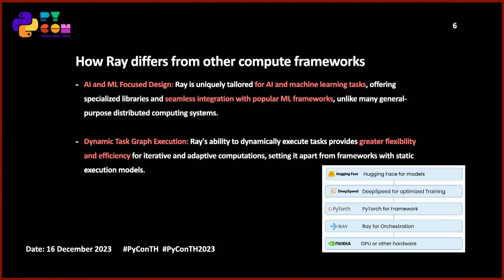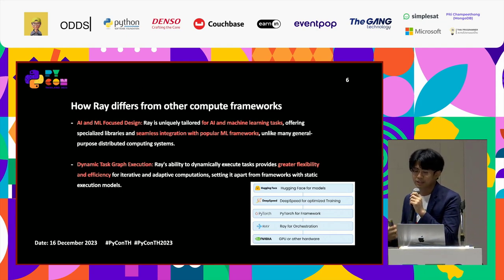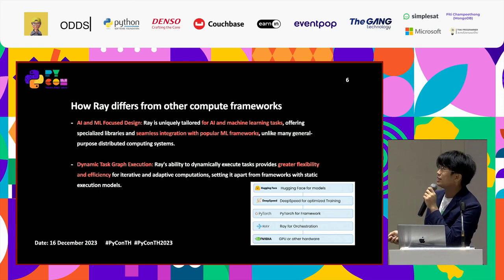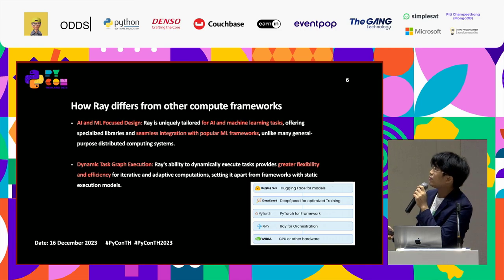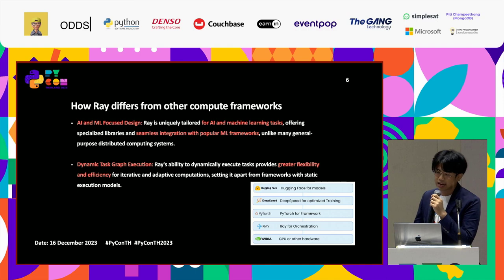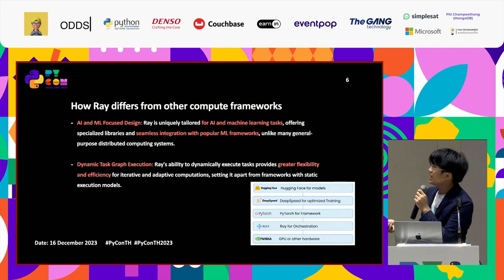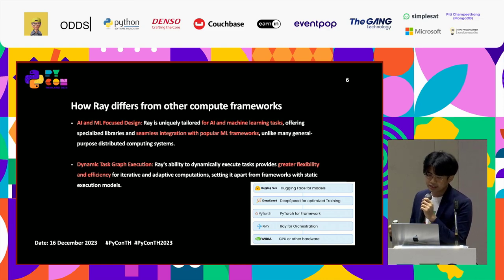What makes Ray different from other compute frameworks? Ray focuses on AI and ML, offering specialized libraries and seamless integration with popular ML frameworks. It can use hashing, disk speed, Python, and GPU or other hardware that fits Ray. Ray also supports dynamic task graph execution, providing greater flexibility and efficiency for iterative and adaptive computation, setting it apart from frameworks with static execution models.